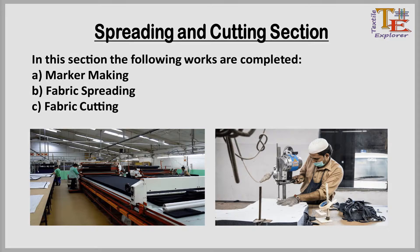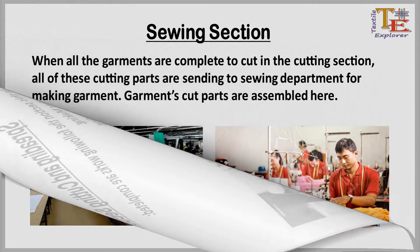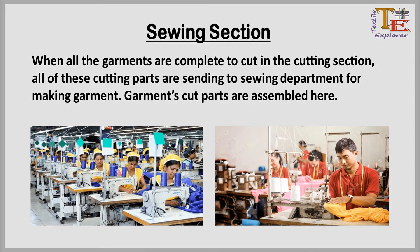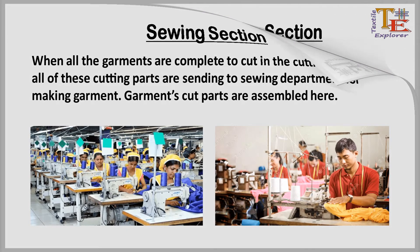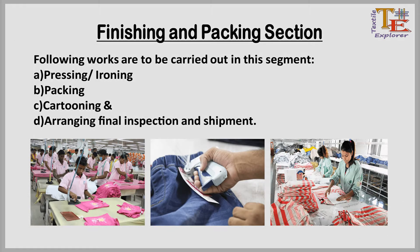In the spreading and cutting section, marker making, fabric spreading, and fabric cutting are completed. The sewing section is the main department for garment manufacturing. When all the garment parts are cut in the cutting section, they are sent to the sewing section for stitching. Garment cut parts are assembled here, and operators sew garments using different types of sewing machines. Operators can be given single or multiple operations.